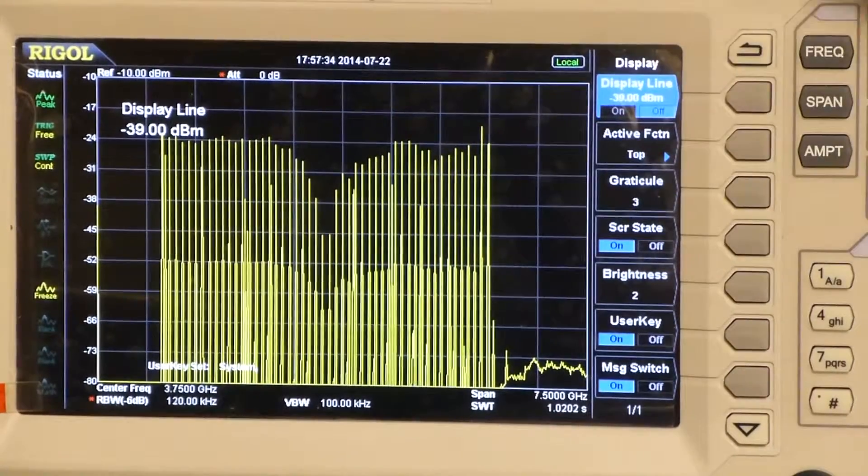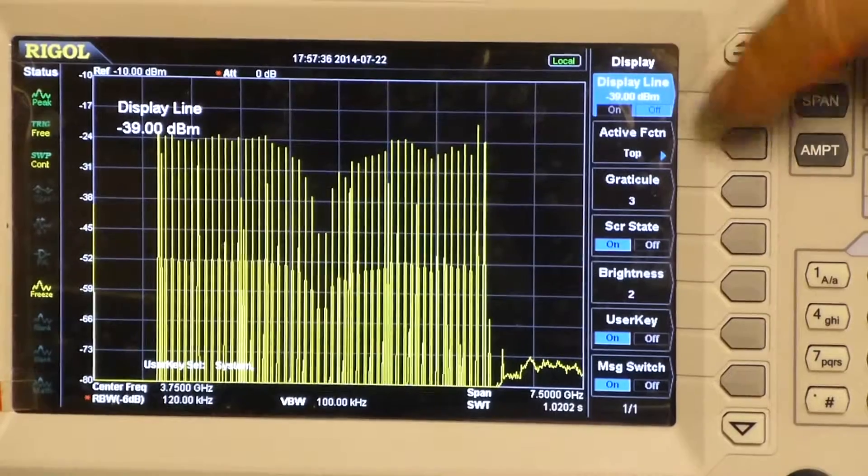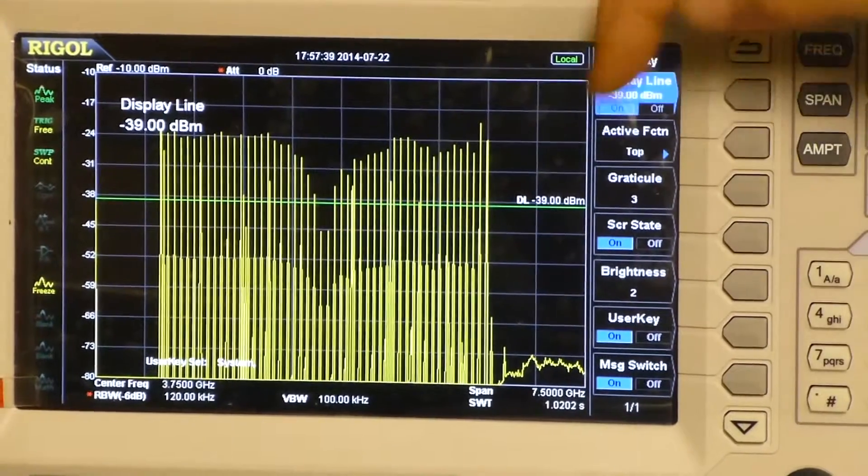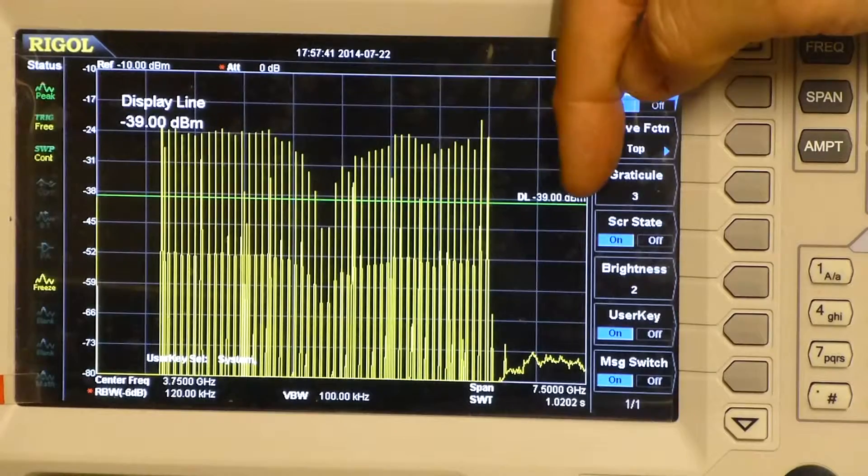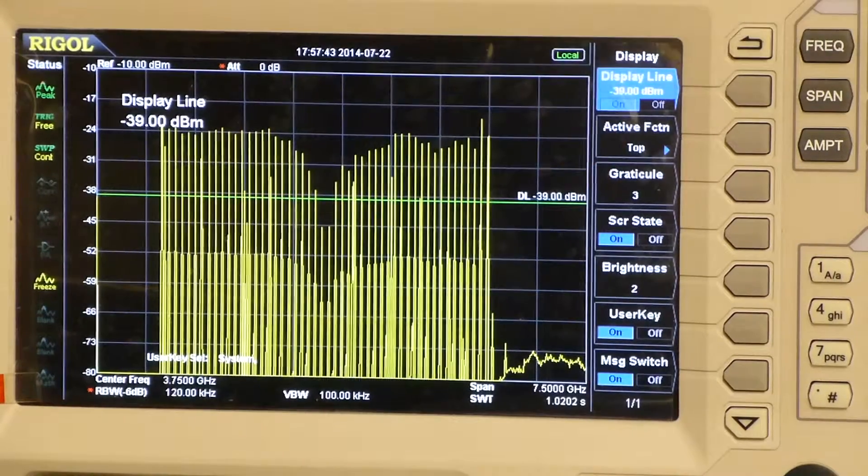If I push that button, you can see that there is an option for me to turn on a display line. And that display line gives me a very clear indication of a minimum level that I can set.